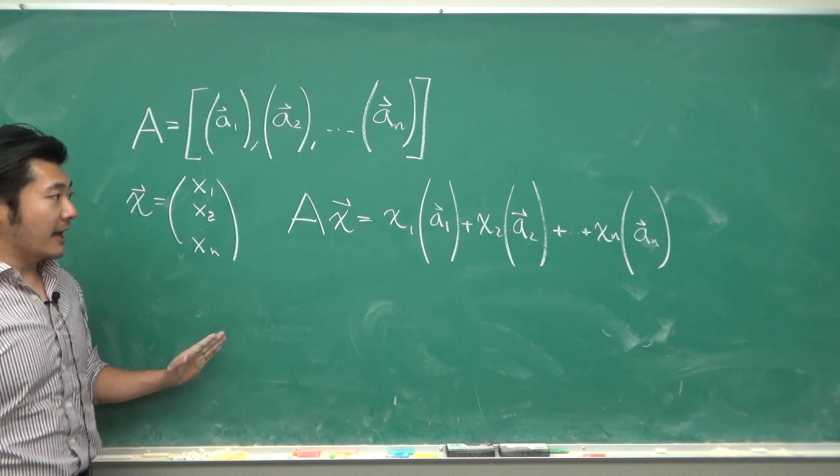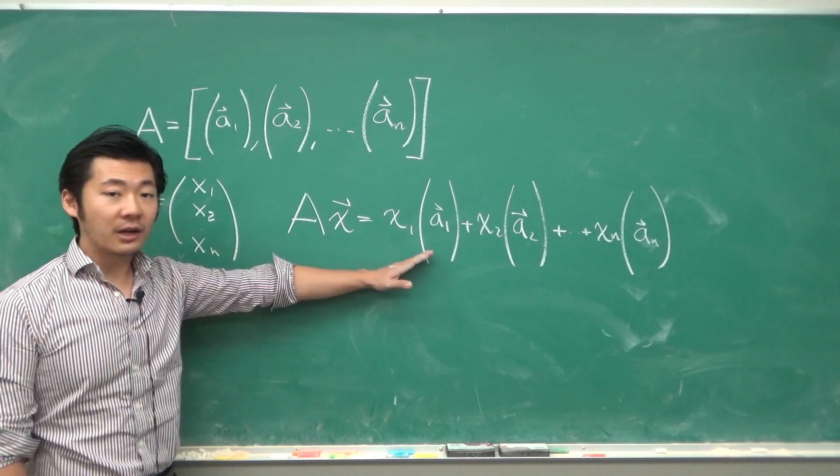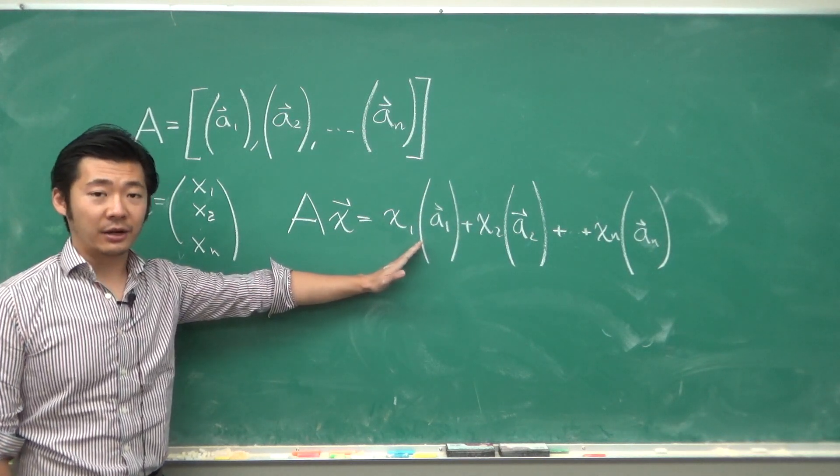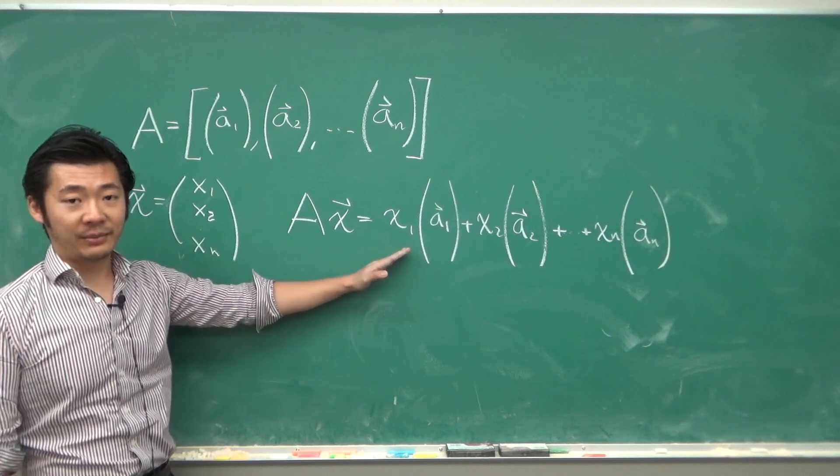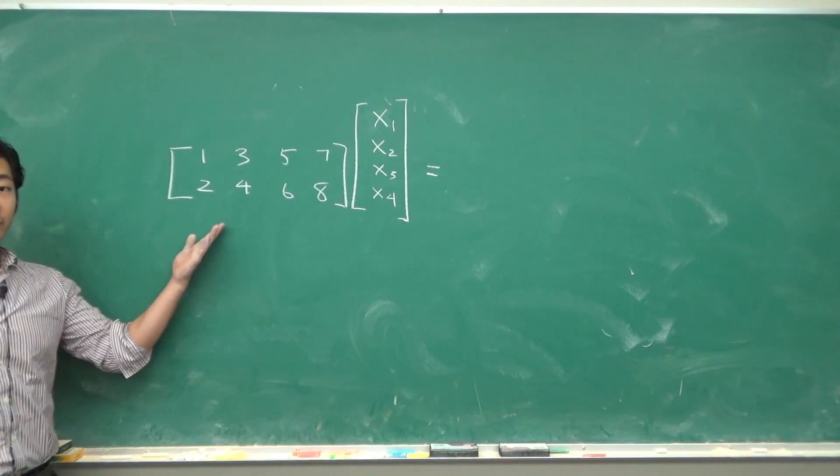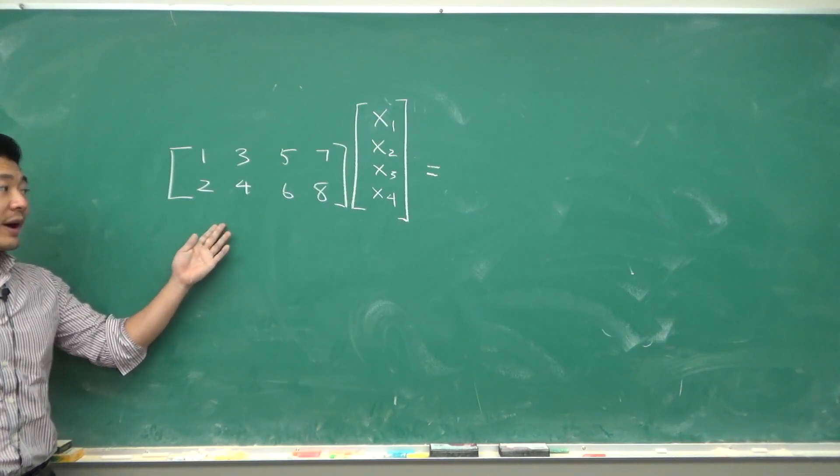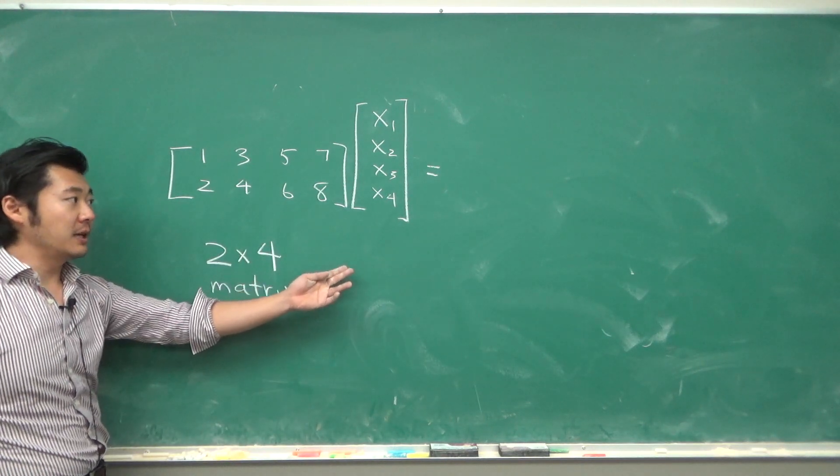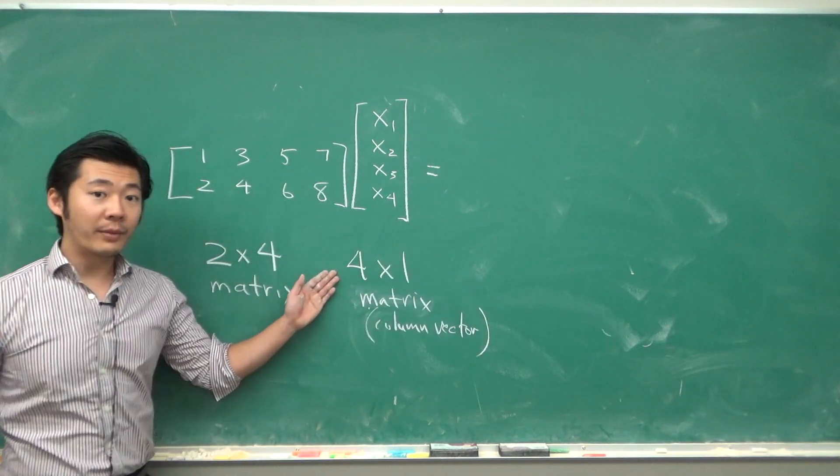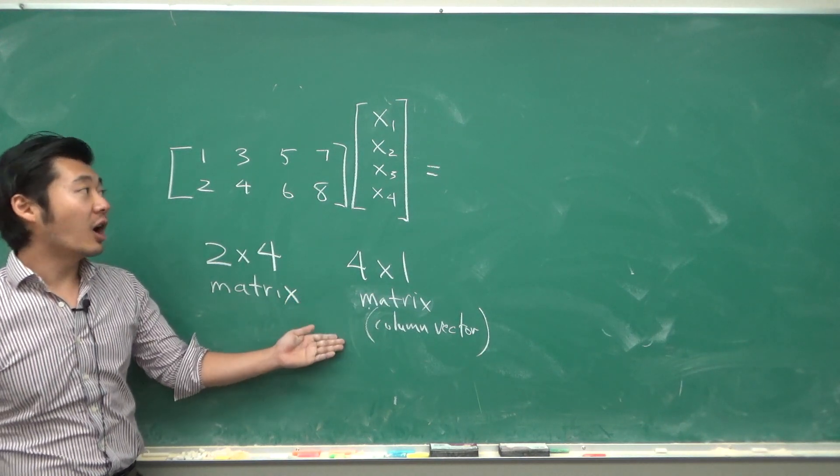Another thing to note is that the size of the columns does not really matter, so we can do a matrix multiplication of something like this. This would be a 2 by 4 matrix and this would be a 4 by 1 matrix or a column vector.